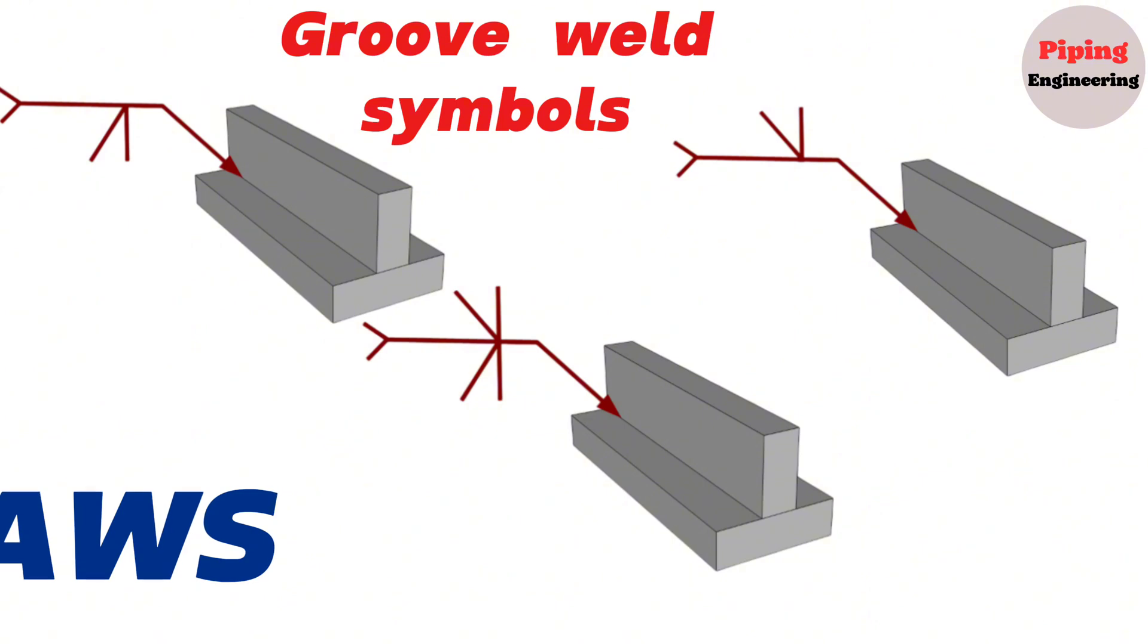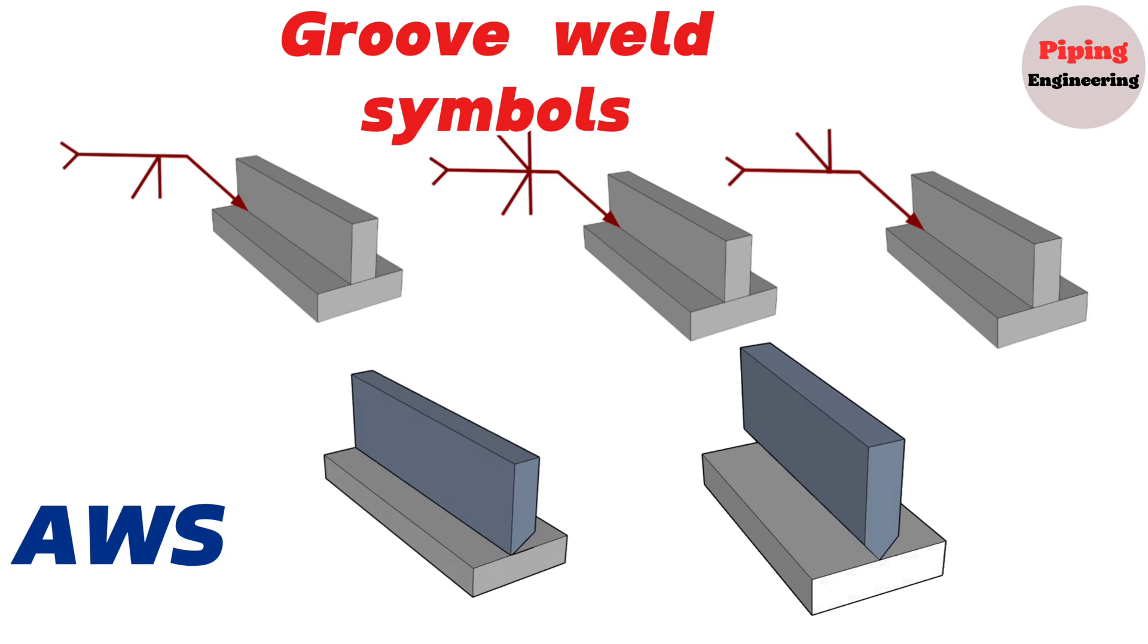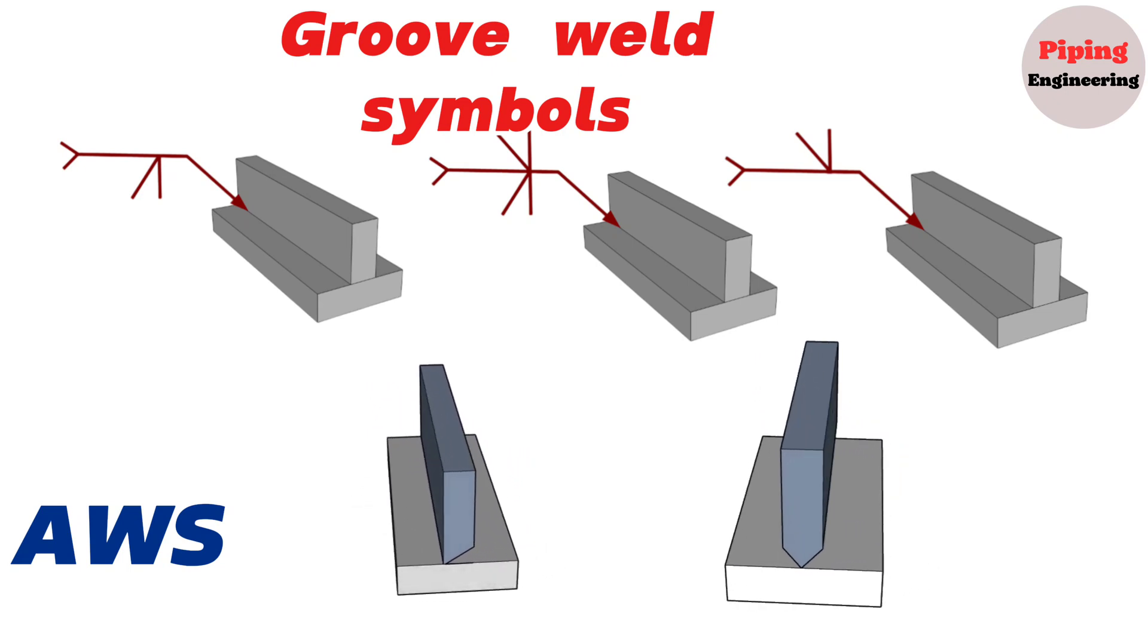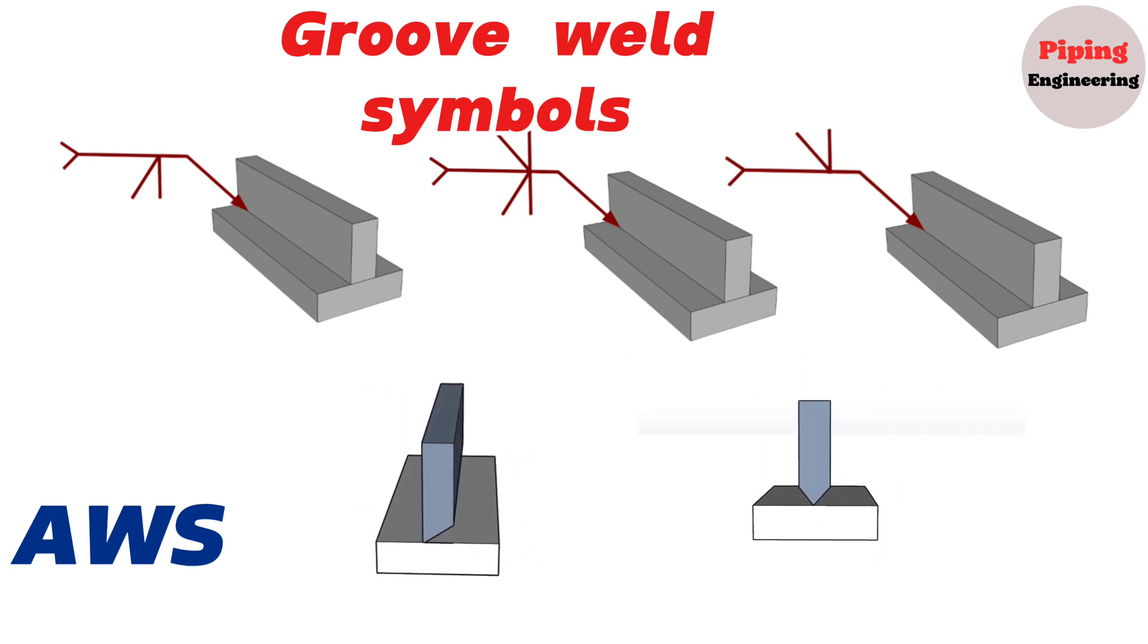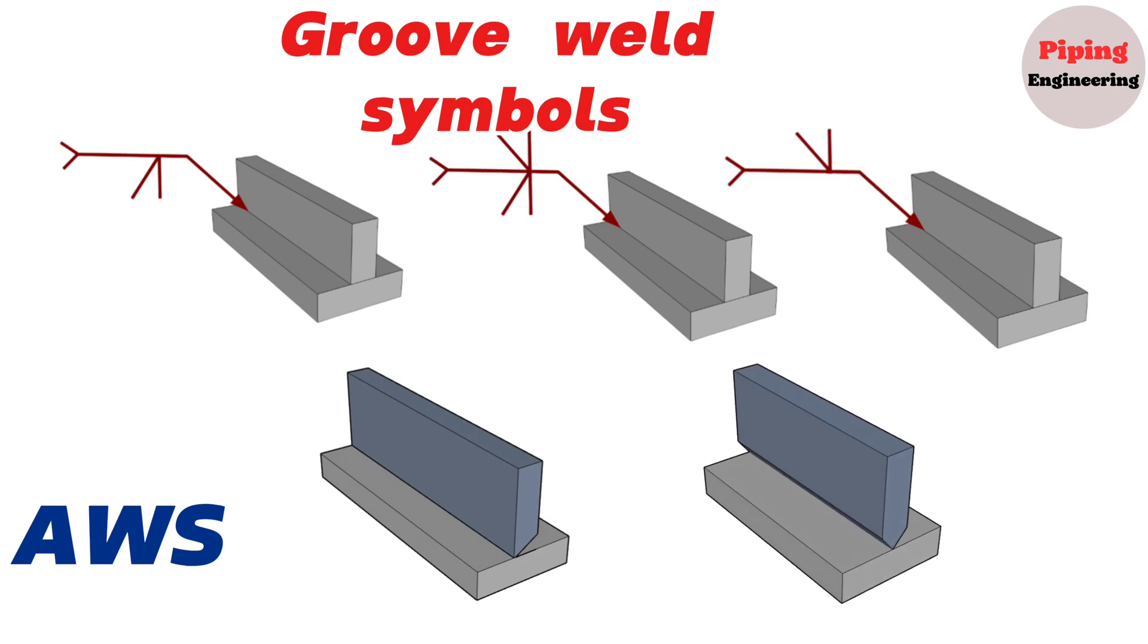A groove weld is defined in the American Welding Society AWS. A weld groove is spaced between two workpieces. All groove welds require the removal of metal from one face, single groove, or both faces, double groove of the workpieces. All the different types of groove welds contain similar features.